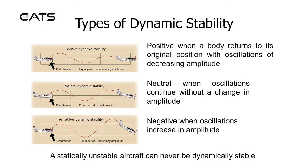Types of dynamic stability: Positive — when a body returns to its original position with oscillations of decreasing amplitude. Neutral — when oscillations continue without a change in amplitude. Negative — when oscillations increase in amplitude. A statically unstable aircraft can never be dynamically stable.